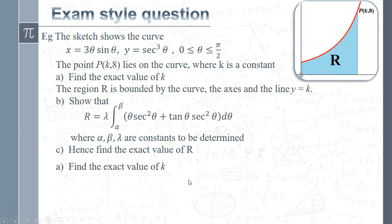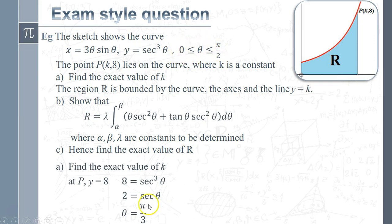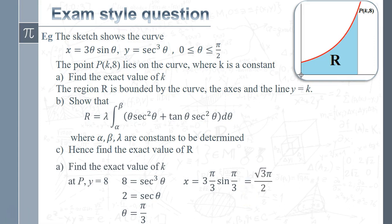Find the exact value of k. At point P we know y = 8, so from y = sec³θ we cube-root to get secθ = 2, meaning θ = π/3. We don't need other values since θ is restricted to [0, π/2]. The x-coordinate is 3·(π/3)·sin(π/3) = π · (√3/2) = π√3/2. So k = π√3/2, and part (a) is sorted.